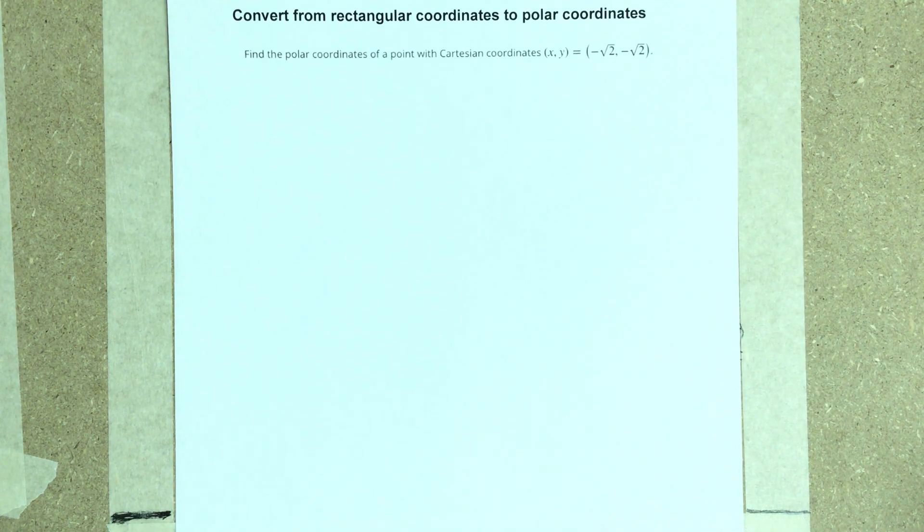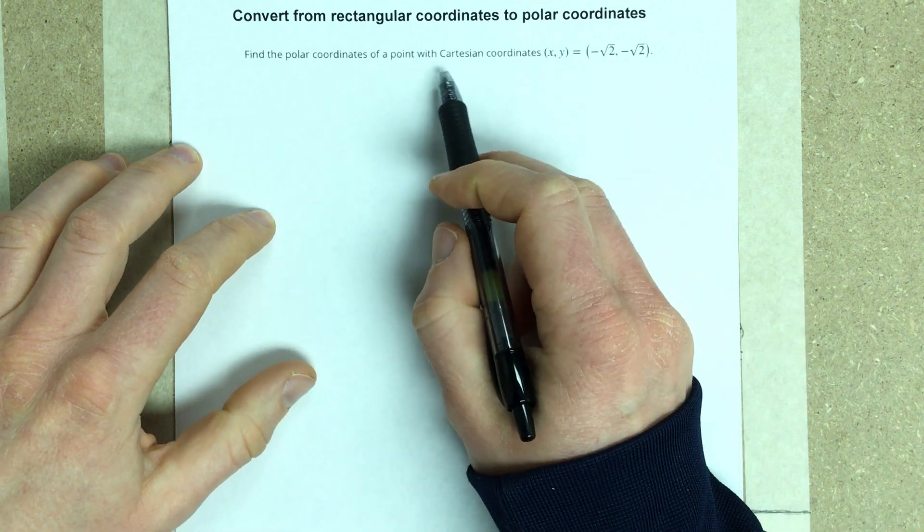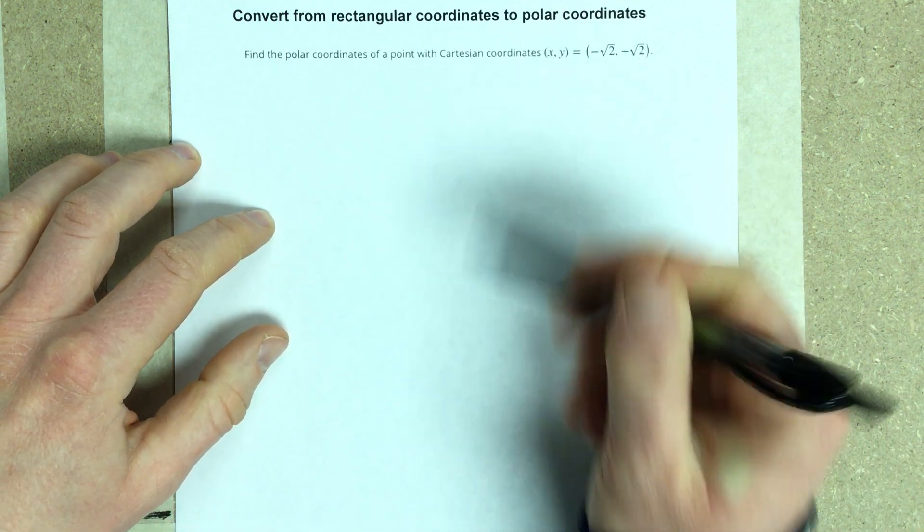In this video, we're going to convert from rectangular coordinates to polar coordinates. So let's find the polar coordinates of a point with Cartesian coordinates x, y, negative root 2, comma, negative root 2.